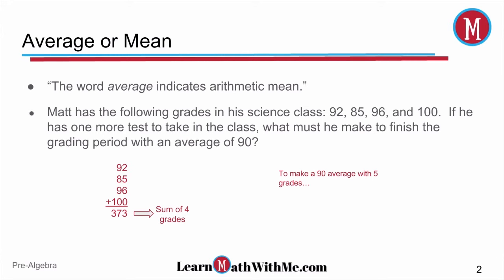Now to make a 90 average with five grades, we know that with five grades there's a possibility of 500 points. So we take that 500 and multiply that by .9 and you get 450. So he needs 450 points out of the possible 500 to have a 90 average.